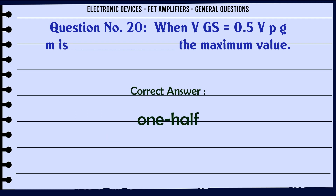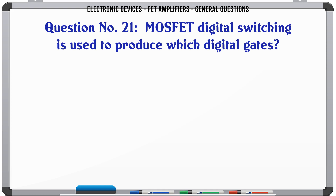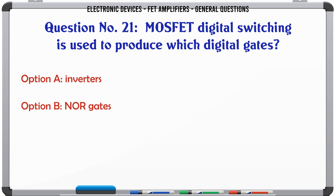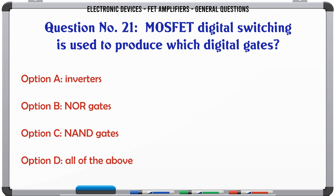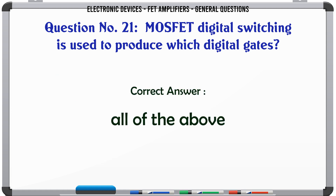MOSFET digital switching is used to produce which digital gates? A. Inverters. B. NOR gates. C. NAND gates. D. All of the above. The correct answer is all of the above.